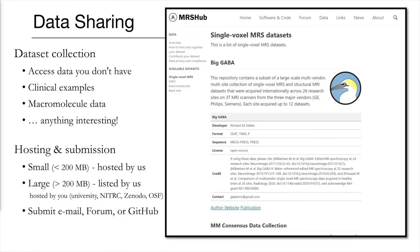Finally, under the data collection tab, we gather important datasets. The data needs to be appropriately anonymized and ethically released, but then we're happy to list any data that is useful to the wider community. There's no limits on the size, whether it's too small or too large — the key thing is that it's of interest and use to the community. There are clinical examples, benchmarking datasets, or even hard-to-get data like macromolecular spectra. We're happy to host smaller datasets under 200 megabytes on the GitHub page, but for larger datasets we'll list it on our website while it needs to be hosted by you, an institution, or a third-party website. There's an easy submission process with good documentation.